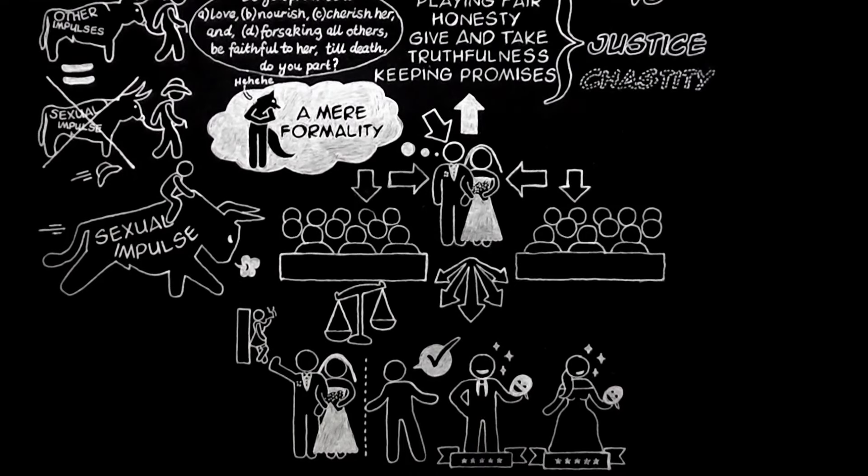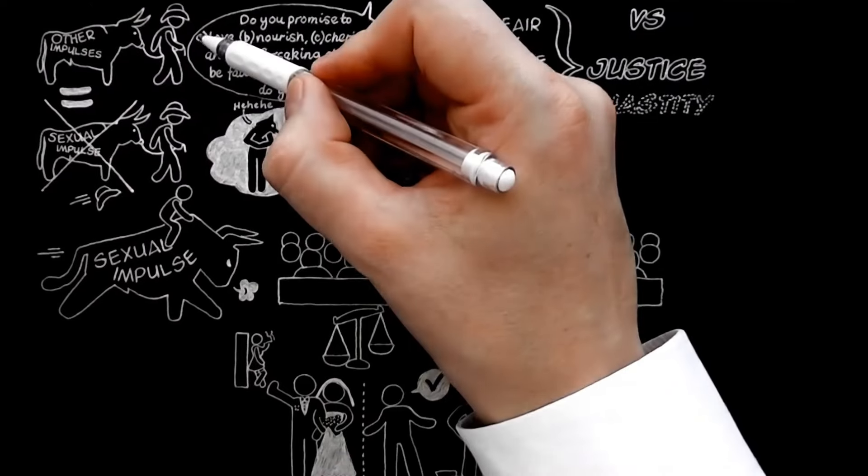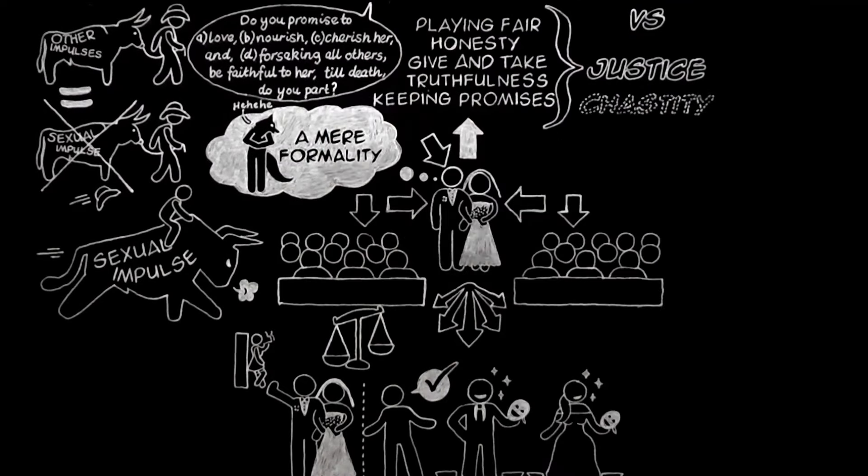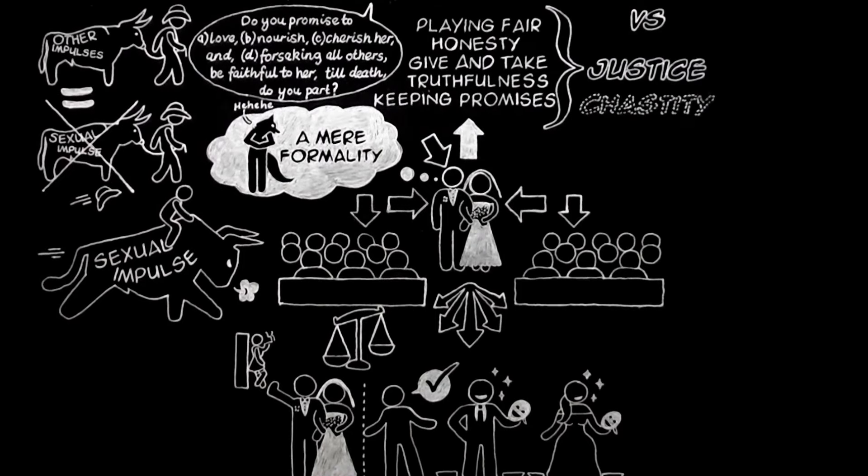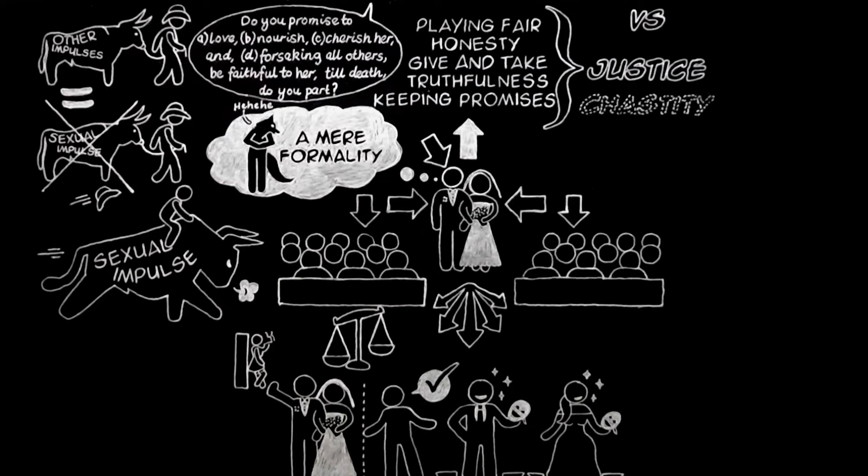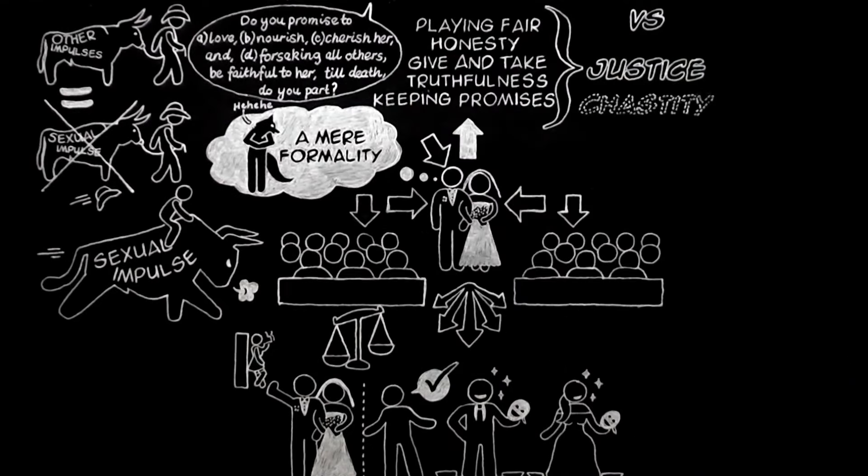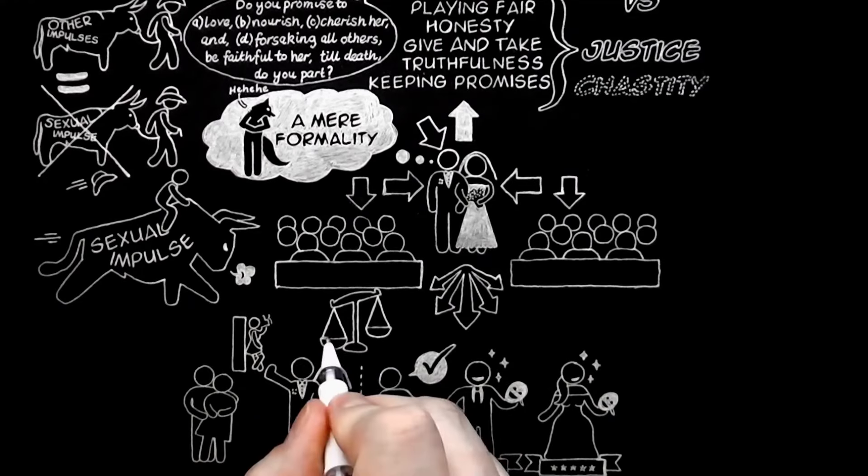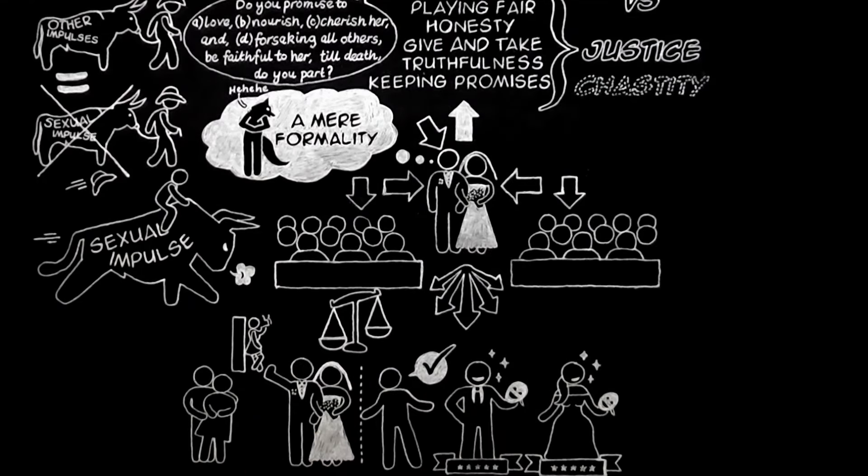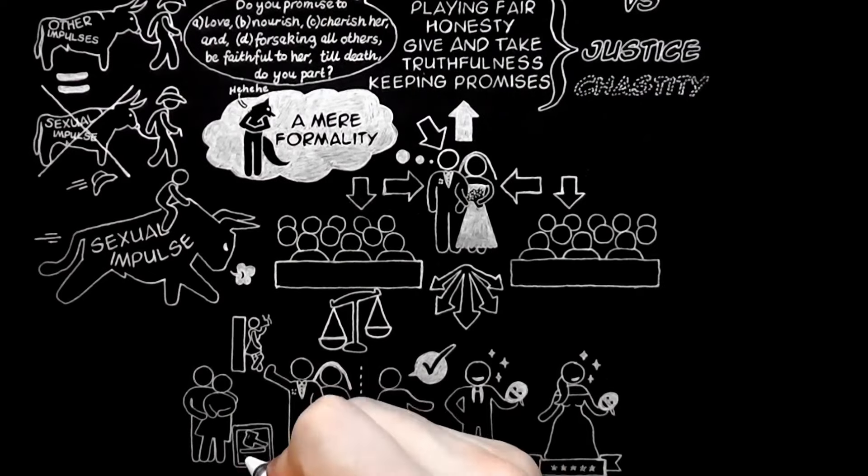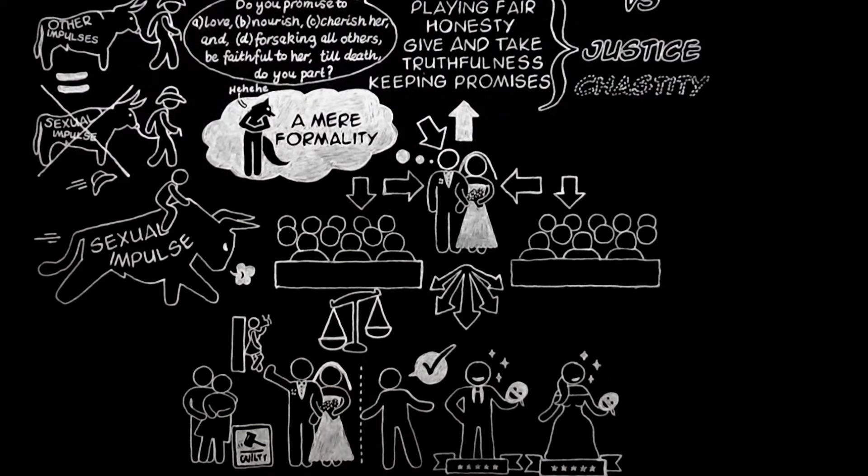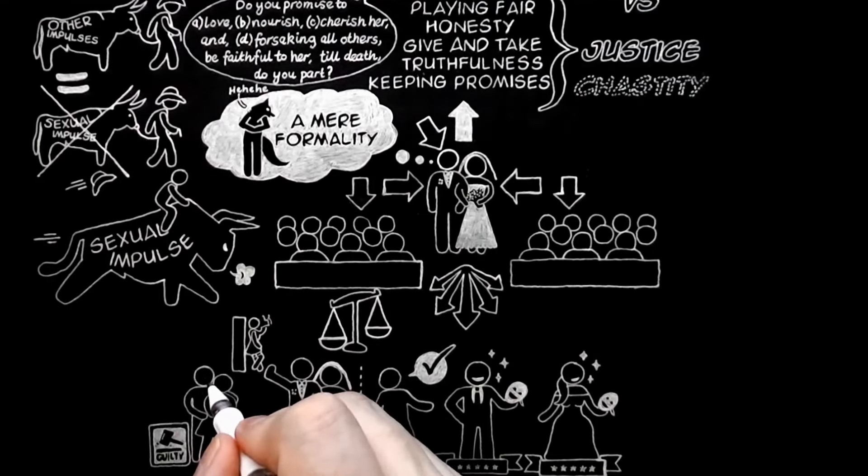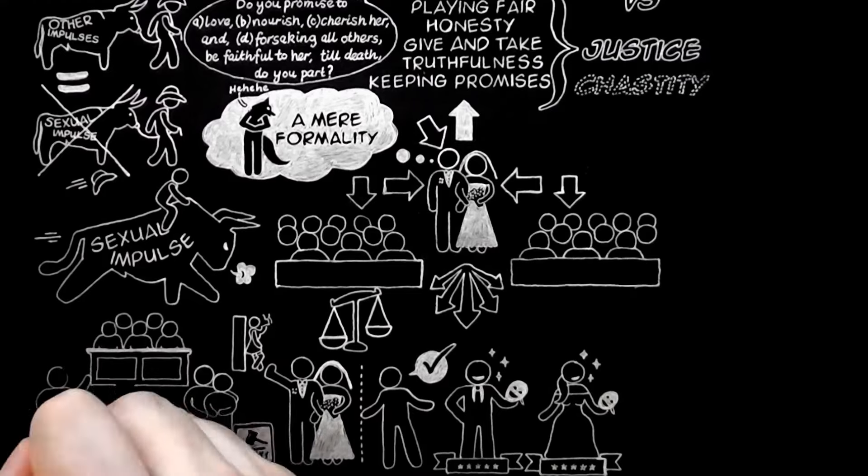If they have now come to their senses and want to be honest, their promise already made constrains them. And this, you will see, comes under the heading of justice, not that of chastity. If people do not believe in permanent marriage, it is perhaps better that they should live together unmarried than that they should make vows they do not mean to keep. It is true that by living together without marriage, they will be guilty, in Christian eyes, of fornication. But one fault is not mended by adding another. Unchastity is not improved by adding perjury.